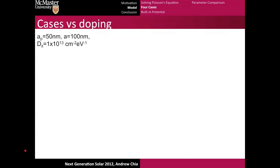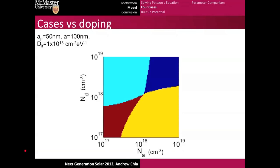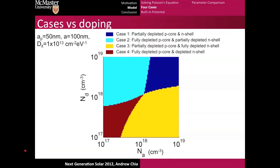Let's take a look at one case first. It is a wire with a core radius of 50 nanometers and a total radius of 100 nanometers and a very typical DIT. DIT is the density of surface states. We get a plot that looks like this, where each of the colors corresponds to one of the cases. The y-axis is the shell doping, and the x-axis is the core doping.